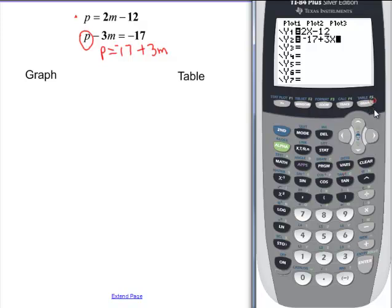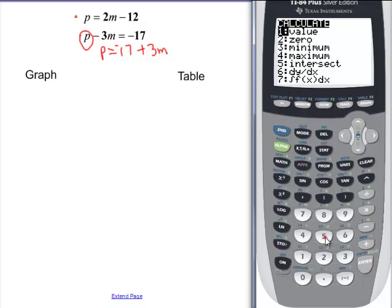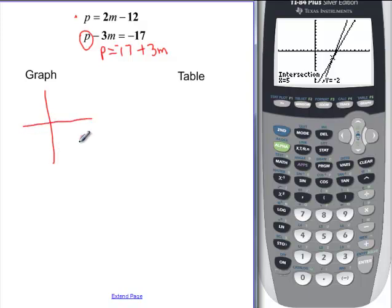Now we can look at our graph and see if we can find the intersection point. There's one line. There's the second line. And I can see my intersection point. So I'm ready to do 2nd, trace, 5, enter, enter, enter. And you would want to make a sketch of your graph. So here's my graph. And they look something like this and something like this. And this point right here then is my solution, which says 5, negative 2.